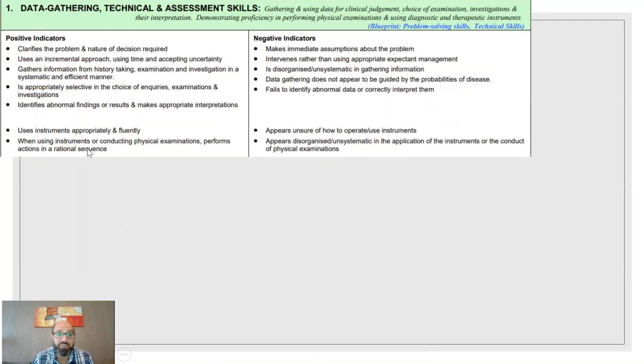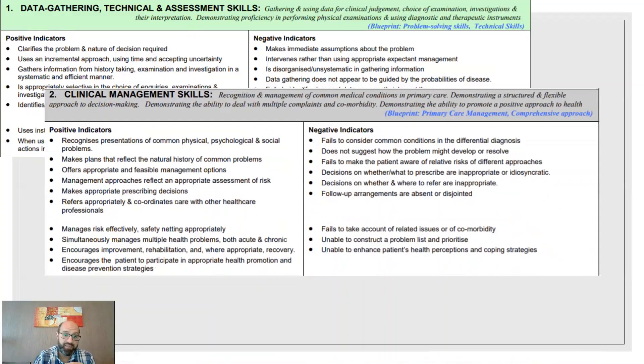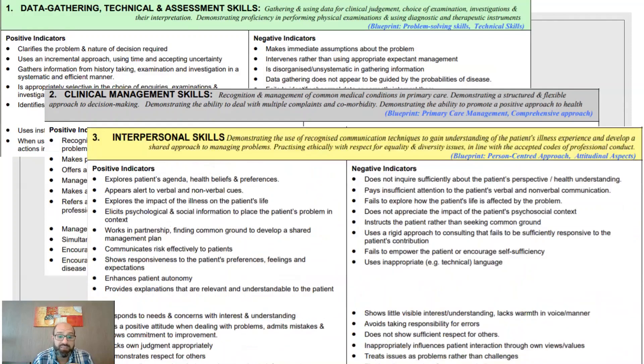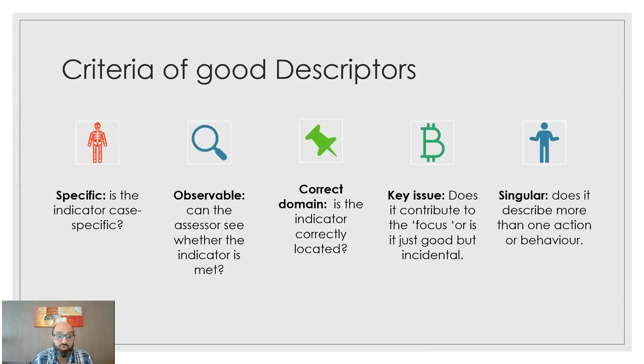For each domain, they have a set of positive indicators. What you need to do while designing your checklist or evaluation sheet is to turn these generic indicators into case-specific ones. I will show you an example shortly, but first we need to discuss the criteria of good descriptors.